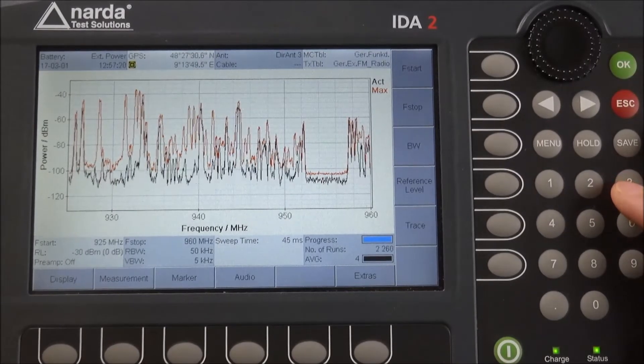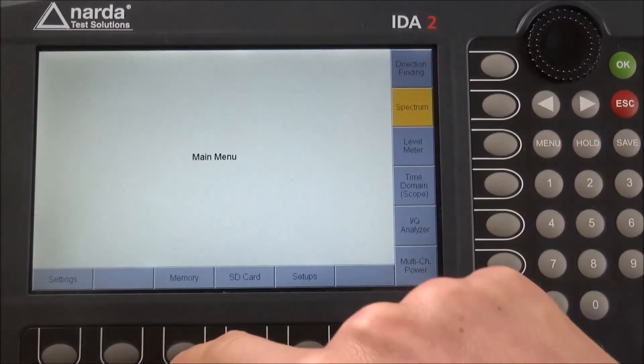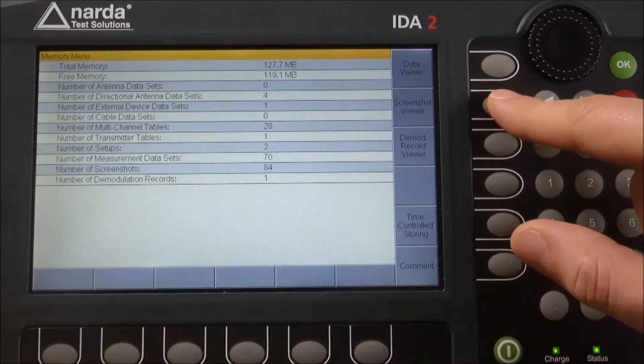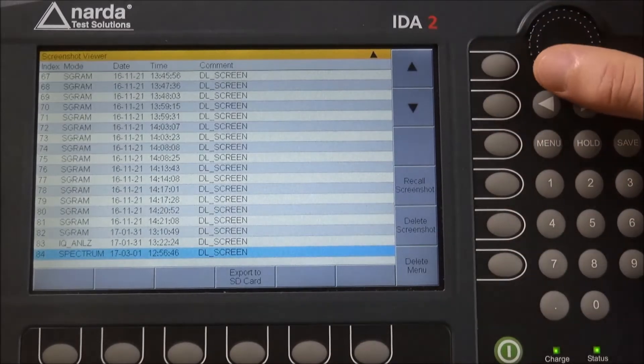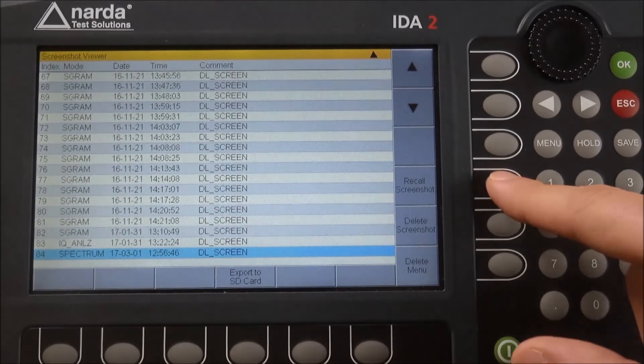So how do we access now those data? You do that by clicking on menu, memory, screenshot viewer. This gives us all the screenshots. This one now would be the last one that we've just created. You recall that.